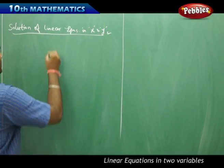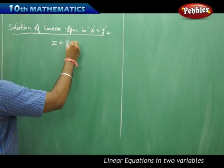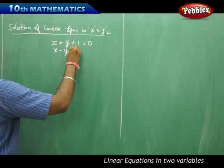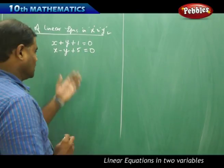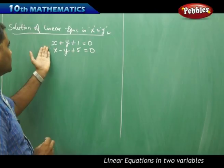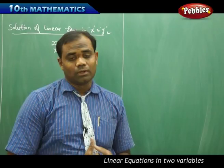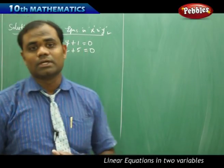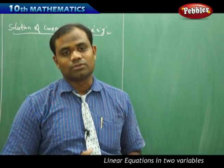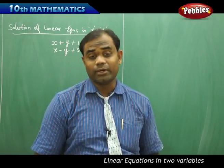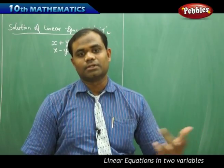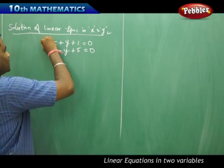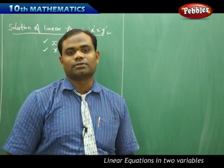Let me take two example equations: x plus y plus 1 equal to 0, and x minus y plus 5 equal to 0. The reason I have taken two linear equations in two variables x and y is that each linear equation has two unknowns, so we need a minimum of two linear equations to get a solution. Getting a solution from one linear equation in two variables is not possible — two unknowns require two conditions, three unknowns require three conditions, one unknown requires one condition.